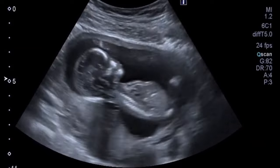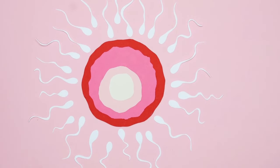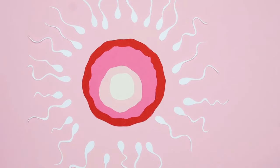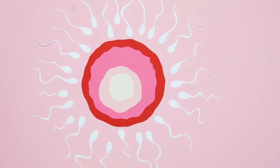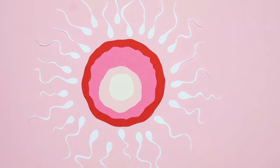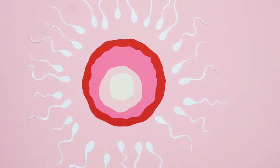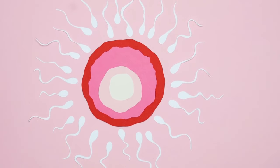The pregnancy journey begins with the formation of ovaries and testis of the potential mother and father of the baby, even before they themselves were born. More development occurs when the parents reach puberty. During and after puberty, the mother usually ovulates every month, followed by menstruation if the egg is not fertilized.